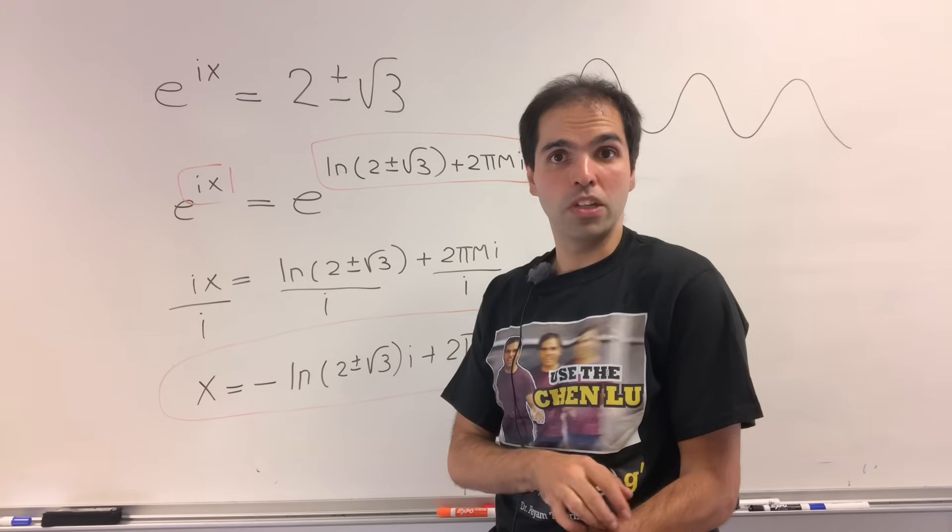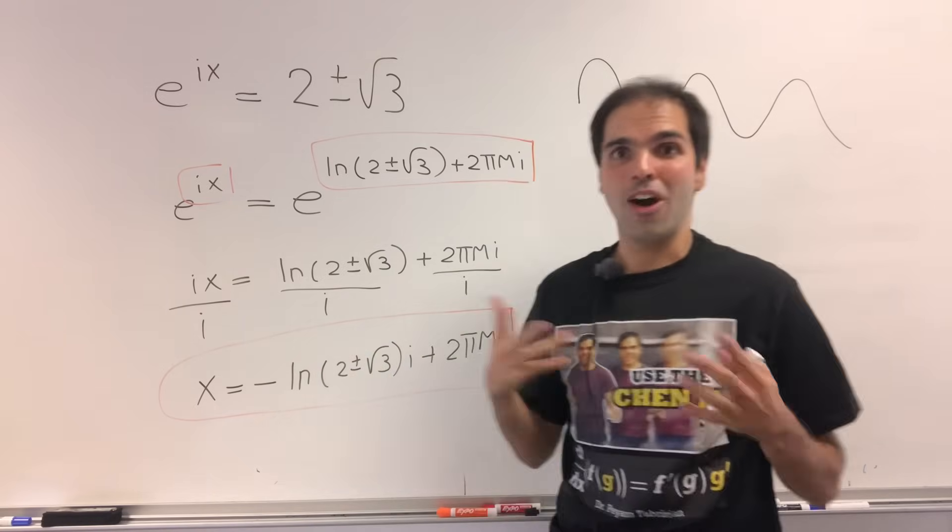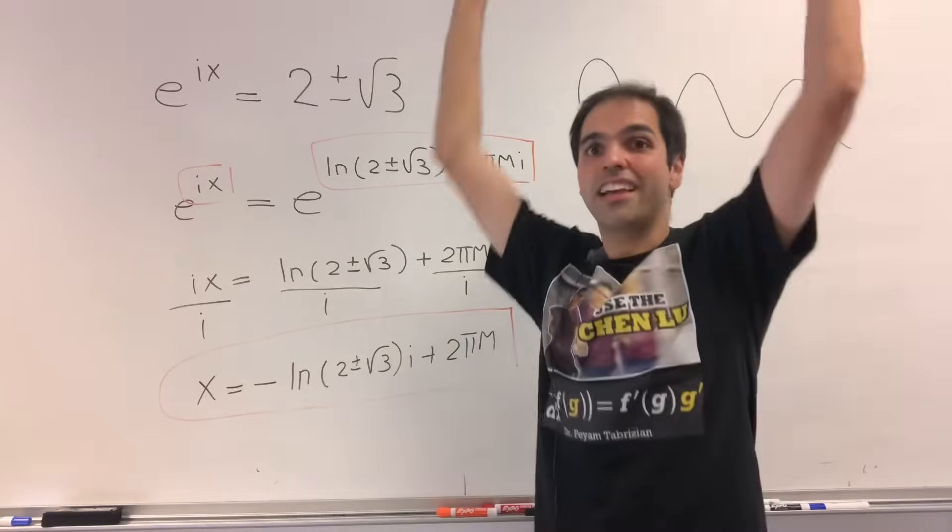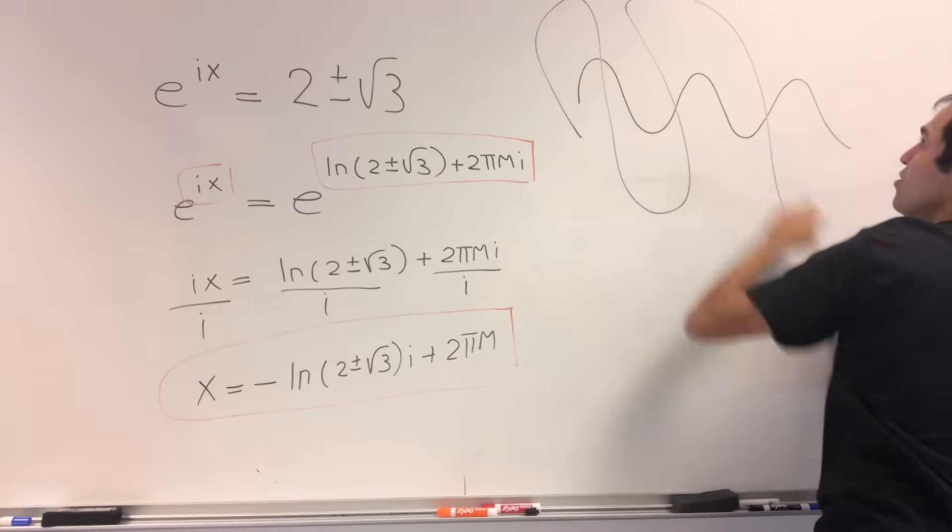But really there's nothing special about 2. You could have done it for any number. So in fact, in the complex world, cosine can kind of go up to infinity. So it might look something like that. Whoosh!